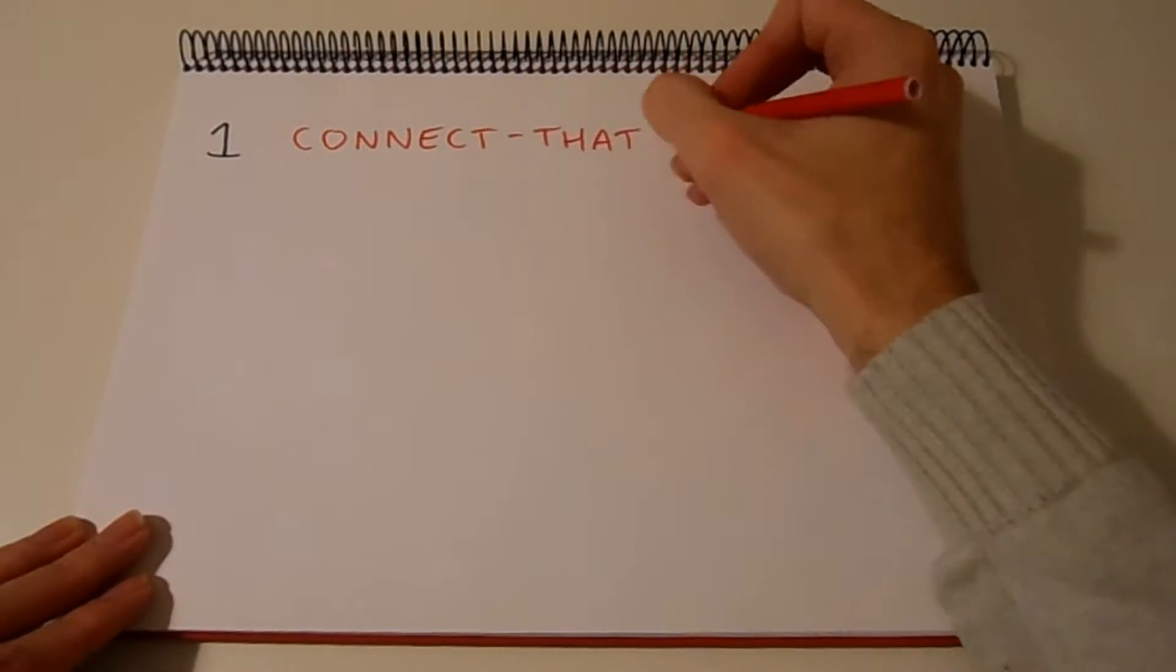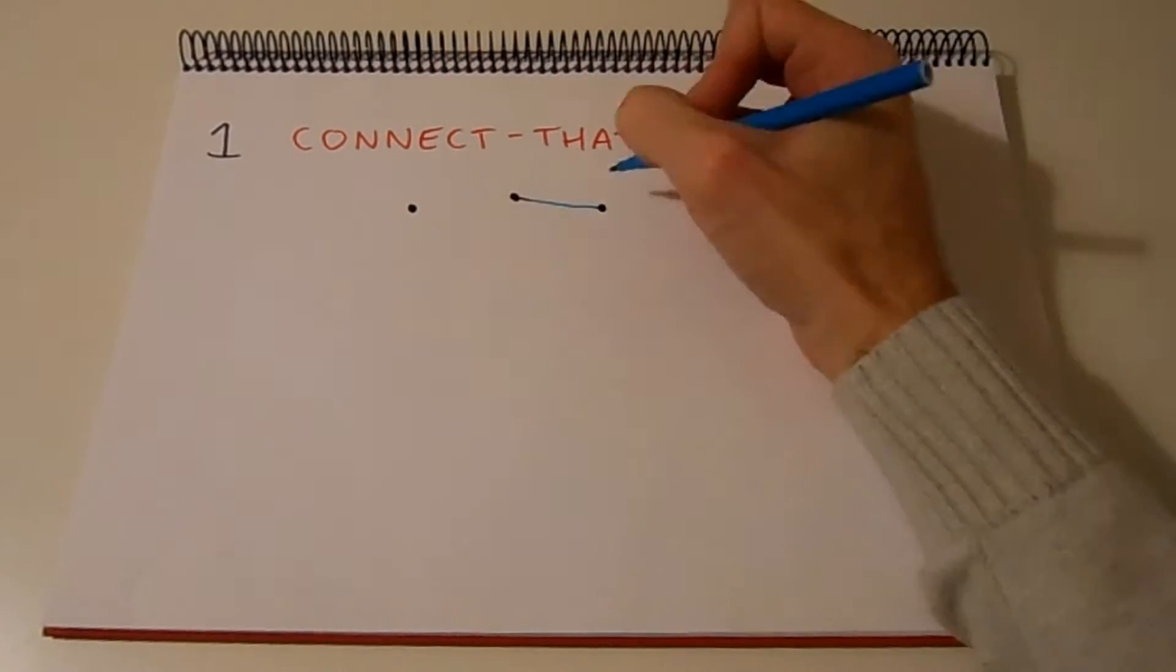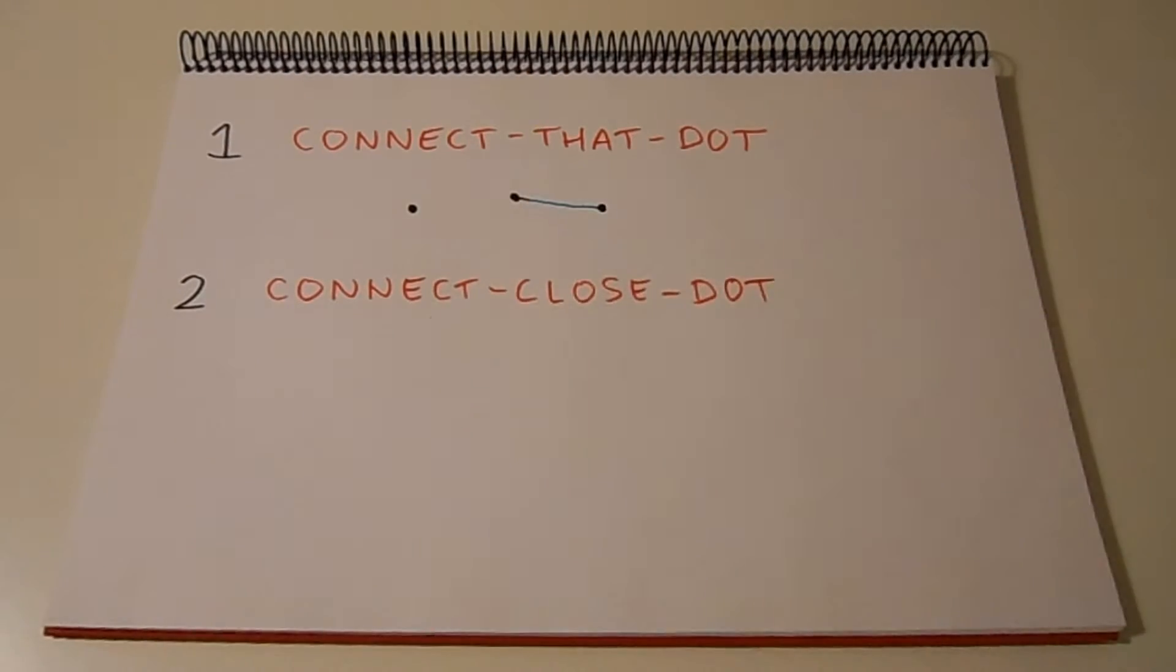But if we don't have numbers, how do we know which dots to connect? Well, we just need some other way of indicating this information. Maybe we can use little arrows, just point to the right dot to connect to. Or we could say each dot must be connected to the closest other dot.